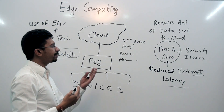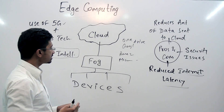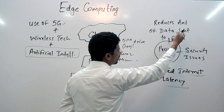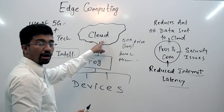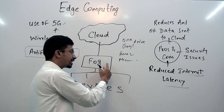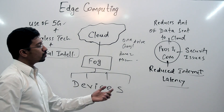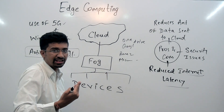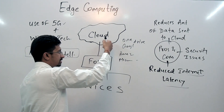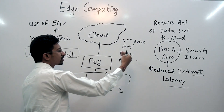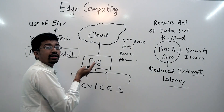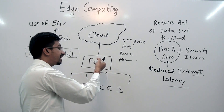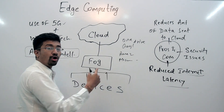There are certain pros and cons and issues associated with edge computing. The first advantage is it reduces the amount of data sent to the cloud — data that we would need to store in the cloud, we can save here instead. After that, there are certain security issues that are also improved. When data was transferred from cloud to cloud, we could have spoofing and security threats. With edge computing, those issues will be reduced. Additionally, the reduced internet latency problem that we have seen can be solved more easily.